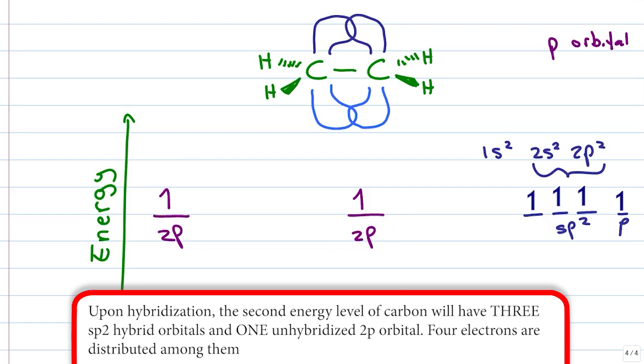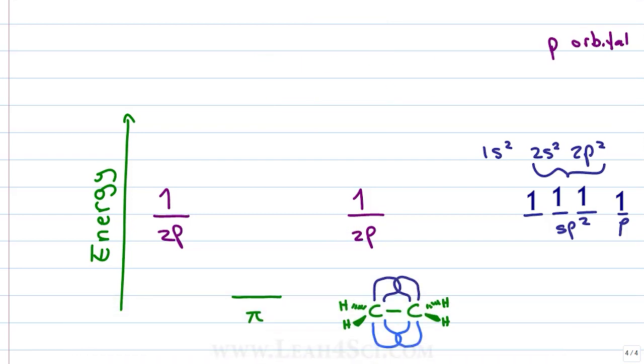When the electrons come together, we get a pi bonding molecular orbital but if they get excited, they jump up into the pi star antibonding molecular orbital which we can imagine something like this.